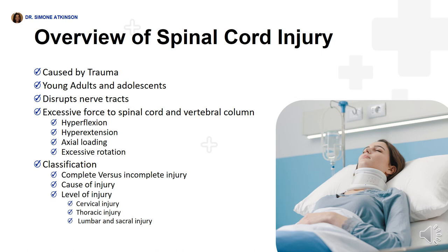An excessive force applied to the spinal cord and the vertebral column usually results in four different types of injuries. First is hyperflexion, which compresses the vertebral bodies and disrupts ligaments and discs. Then there is hyperextension, which disrupts ligaments and causes vertebral fractures. Another condition is axial loading, which is an excessive application of a vertical force that may cause compression fractures.